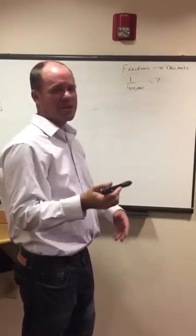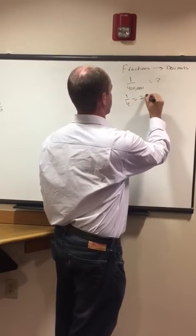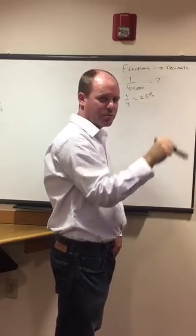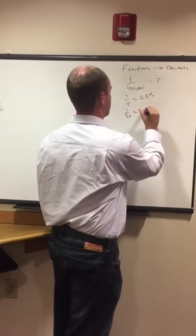Here's how we go about solving this: 1 out of 4 equals 25%, then we're going to keep going down, add a 0, move the decimal point one spot to the left. 1 out of 40, 2.5%.